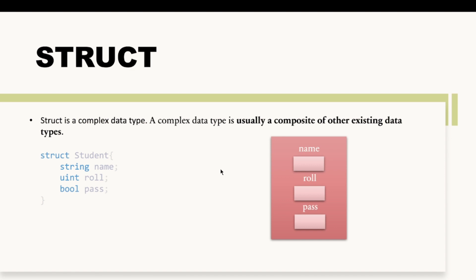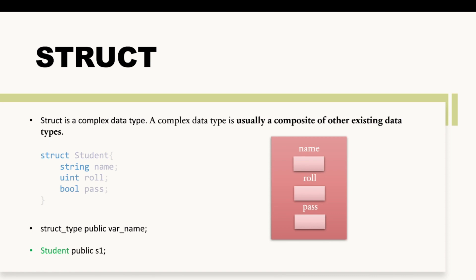To declare a struct variable, you write the struct type, then public (which is optional), then the variable name. So if I want a variable of Student type, I write 'Student public s1'. Just like uint public v1 stores integer values, Student public s1 can hold all these different student values.